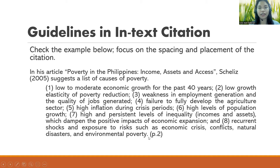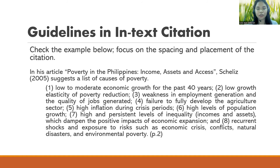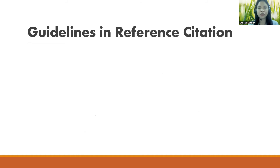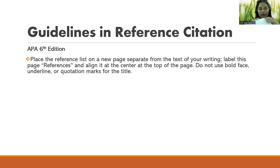That is for direct quotation. Now let's proceed to the guidelines for reference citation. Still in APA 6th edition. The first guideline is: place the reference list on a new page, separate from the text of your writing.